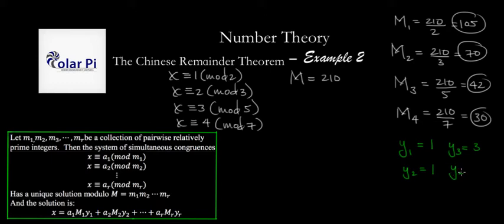And then, Y4, the last one, is going to be 4, because, and this is the one that was hard for me to figure out, because I didn't know that 4 times 30, which is 120, is one more than a multiple of 7, because I didn't know that there was a multiple of 7 that close to 120, but there is. 7 times 17 is 119.